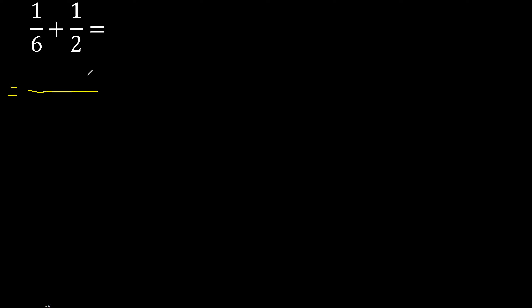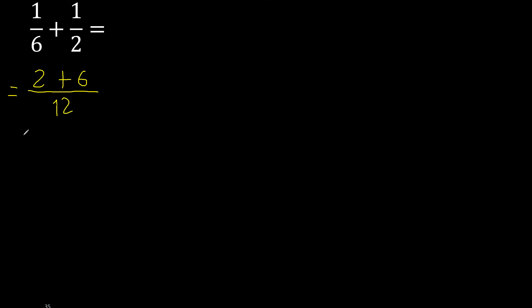First multiply like this: 2 multiplied by 1 is 2, 6 multiplied by 1 is 6, 6 multiplied by 2 is 12, and 8.